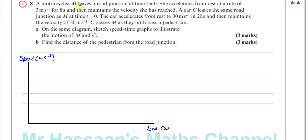The motorcyclist M leaves the road junction at time t equals 0 and accelerates from rest — so the starting point is at the origin. She accelerates at 3 meters per second squared for 8 seconds, reaching a particular speed which we need to calculate. Let's mark that speed on the graph.